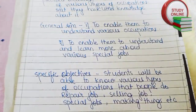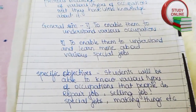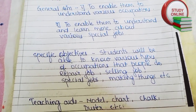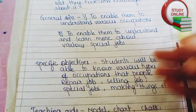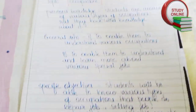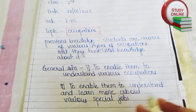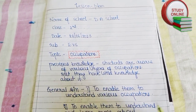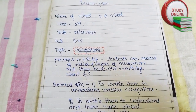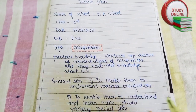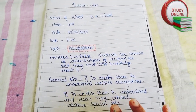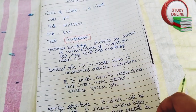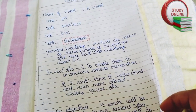For specific objectives, you can write according to you. For teaching aids, we have to write whatever teaching aids we are going to use while we teach students — we have to write all those teaching aids here. This is the first page of our lesson plan.